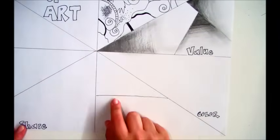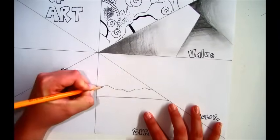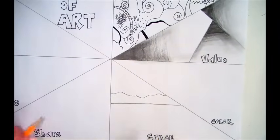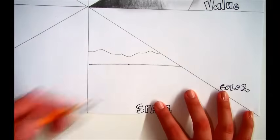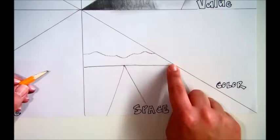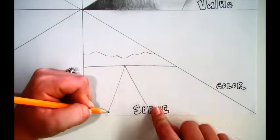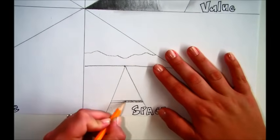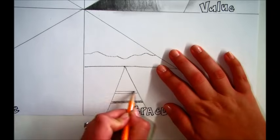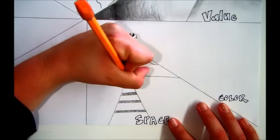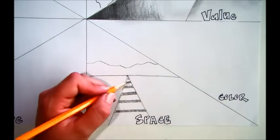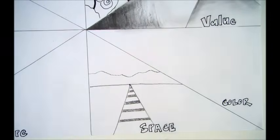Next, let's skip over to space. First, start by drawing a horizon line and then a mountain range. Then draw in a vanishing point in the center of the horizon. And then converge two lines to that point to create what appears to be a railroad track or a road. Notice how the lines get smaller as they move back into space.